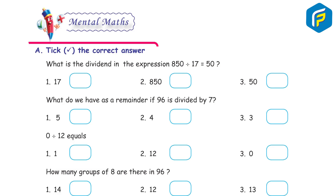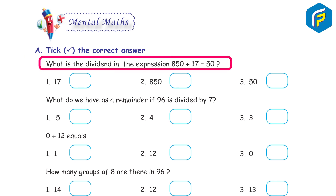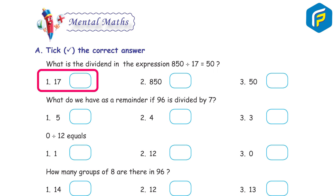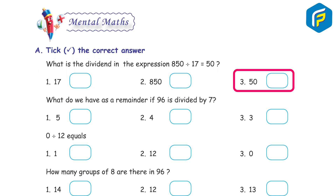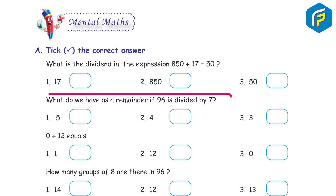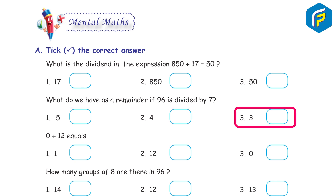Mental maths. Choose the correct answer. a) What is the dividend in the expression 850 ÷ 17 = 50? Options: 1) 17, 2) 850, 3) 50. b) What is the remainder when 96 is divided by 7? Options: 1) 5, 2) 4, 3) 3. c) How many groups of 8 are there in 96?